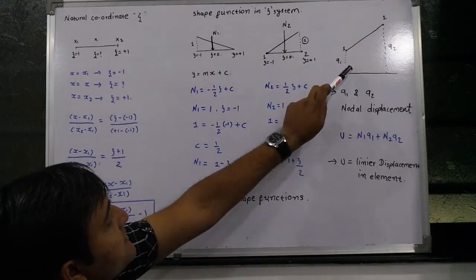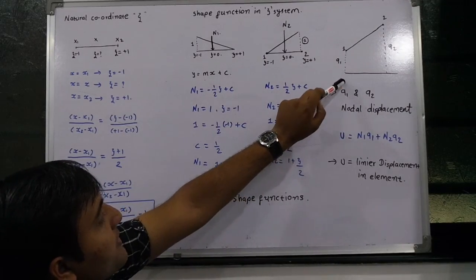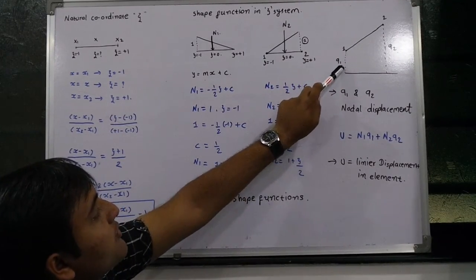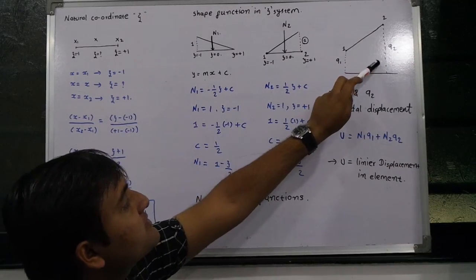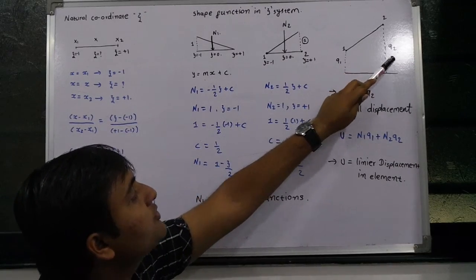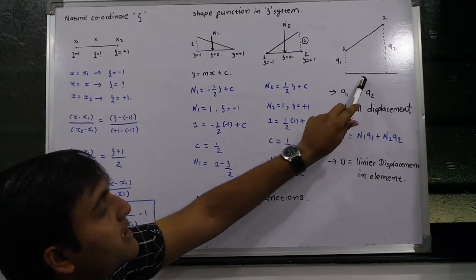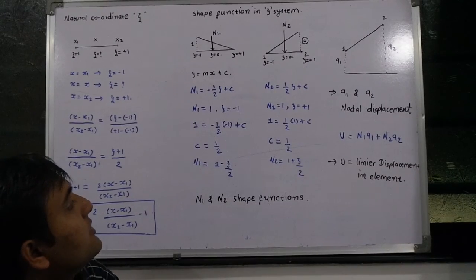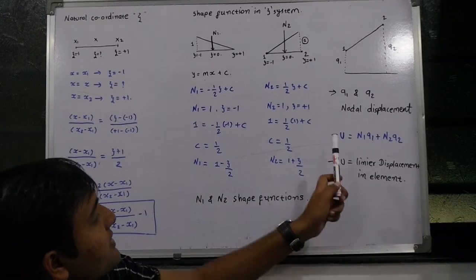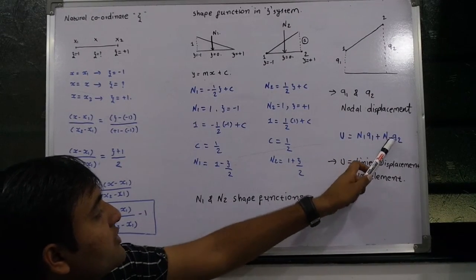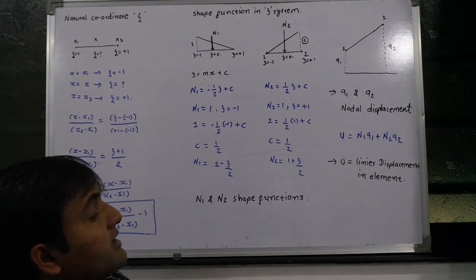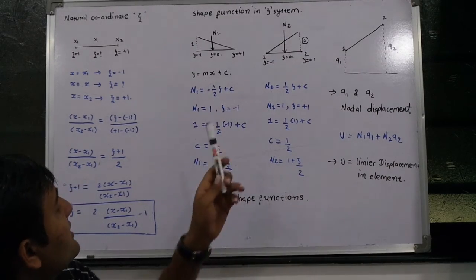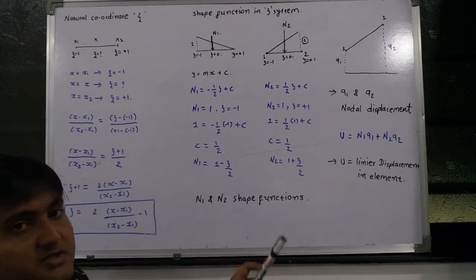Now let's look at the figure. In this figure, node 1 has a displacement of q1 and node 2 has a displacement of q2 with respect to the datum line. We want to understand how the equation u equals n1*q1 plus n2*q2 is defined, where n1 and n2 are shape functions.